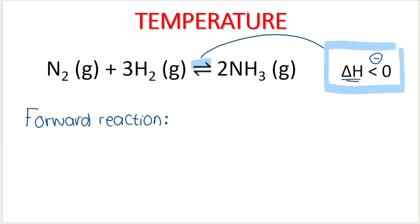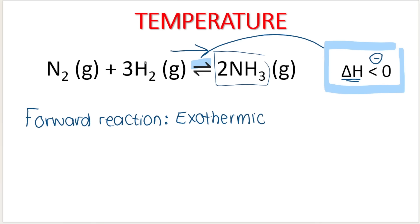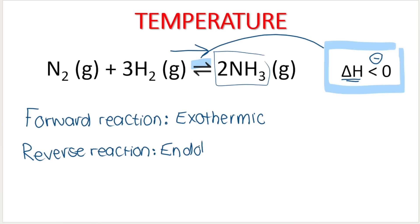So what that tells me is that the forward reaction — the reaction that produces ammonia — is exothermic, which means it will release heat. When nitrogen and hydrogen are used up to produce ammonia, that production of ammonia is accompanied by heat loss. Heat is released. And that immediately means that the reverse reaction is endothermic — it will always, always be the opposite. The information given always refers to the forward reaction, and then the opposite refers to the reverse.